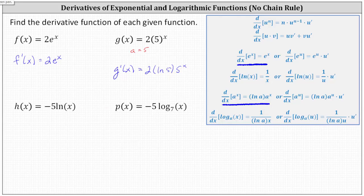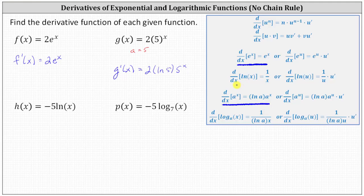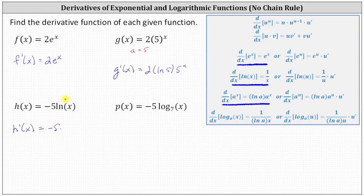Next we have two log functions. h(x) equals negative five natural log x. Remember, natural log is log base e. The derivative of natural log x with respect to x is equal to one divided by x, indicating h prime of x is equal to the derivative of negative five natural log x, which equals negative five times one divided by x. Simplifying, h prime of x equals negative five divided by x.